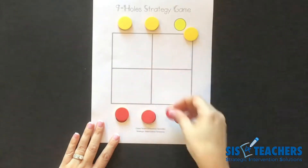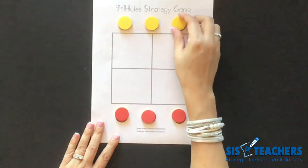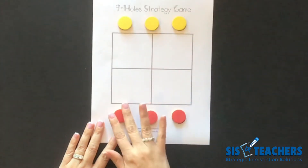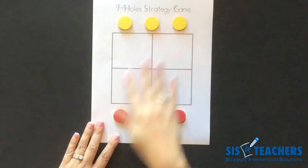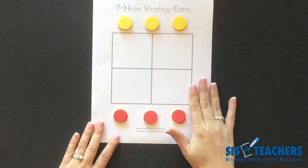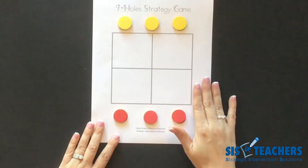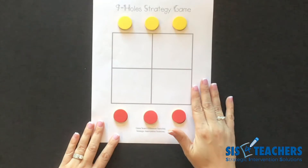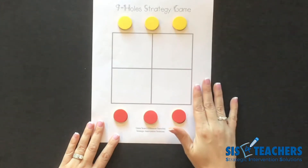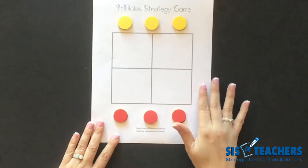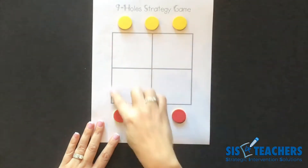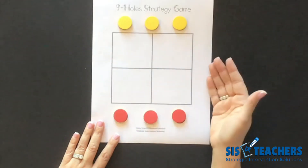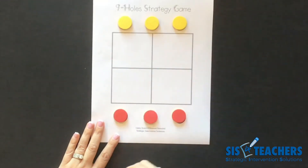The idea here is that we don't end up having a cat's game because it's a continuous movement. The game board — although you can download it on our website, and we're offering this game for free — you can also just draw this game on a piece of paper or a dry erase board in your classroom and do it the same way.